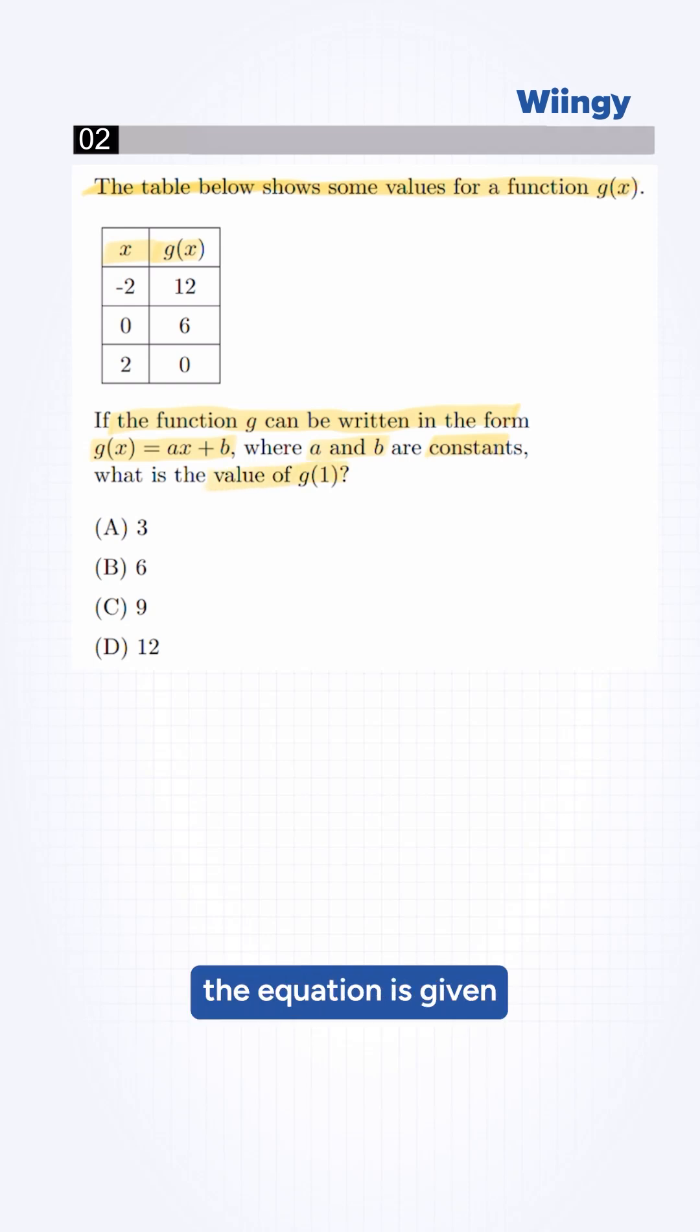First, the equation is given: g of x is equal to ax plus b, where a is the slope and b is the y-intercept. So we take a point and substitute into our equation.